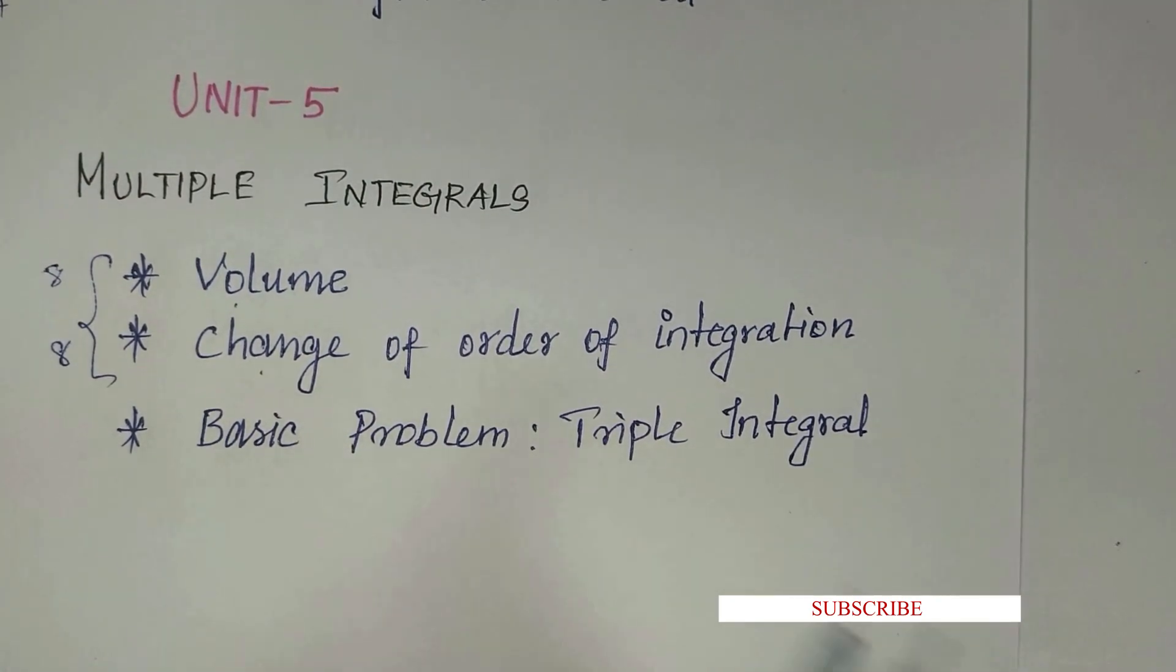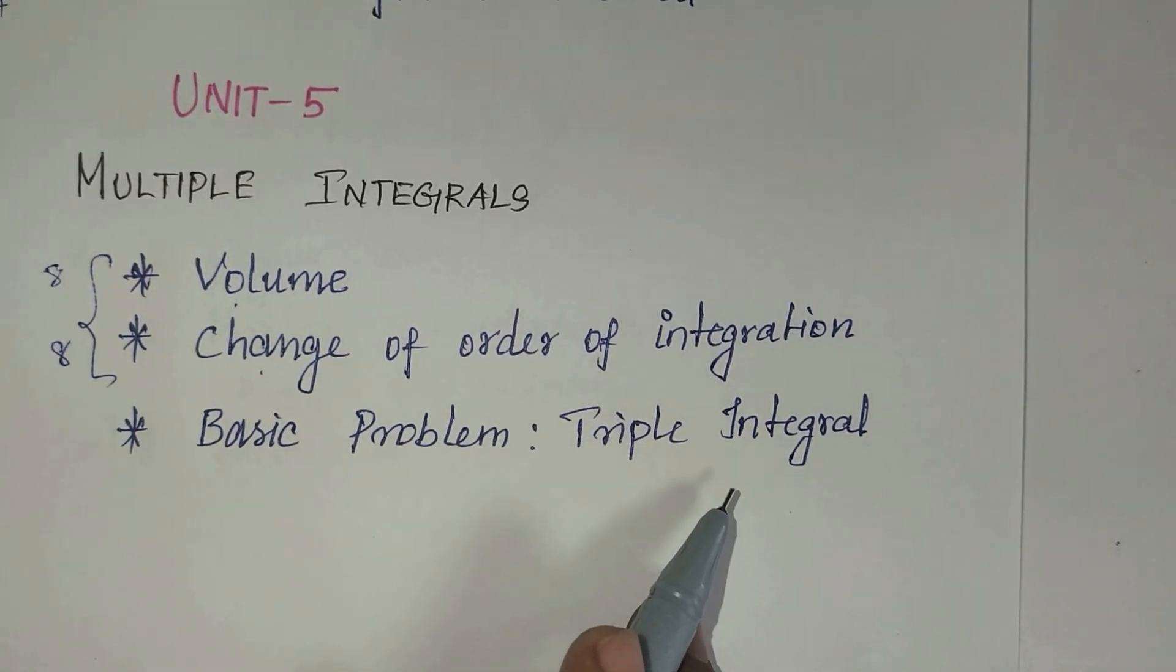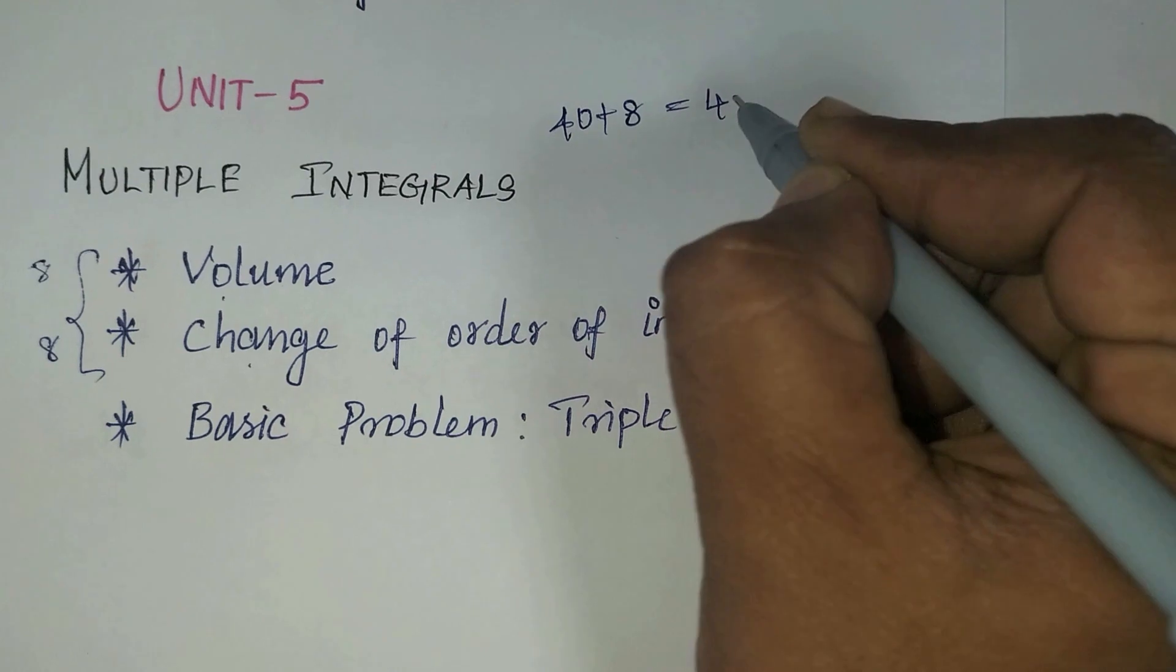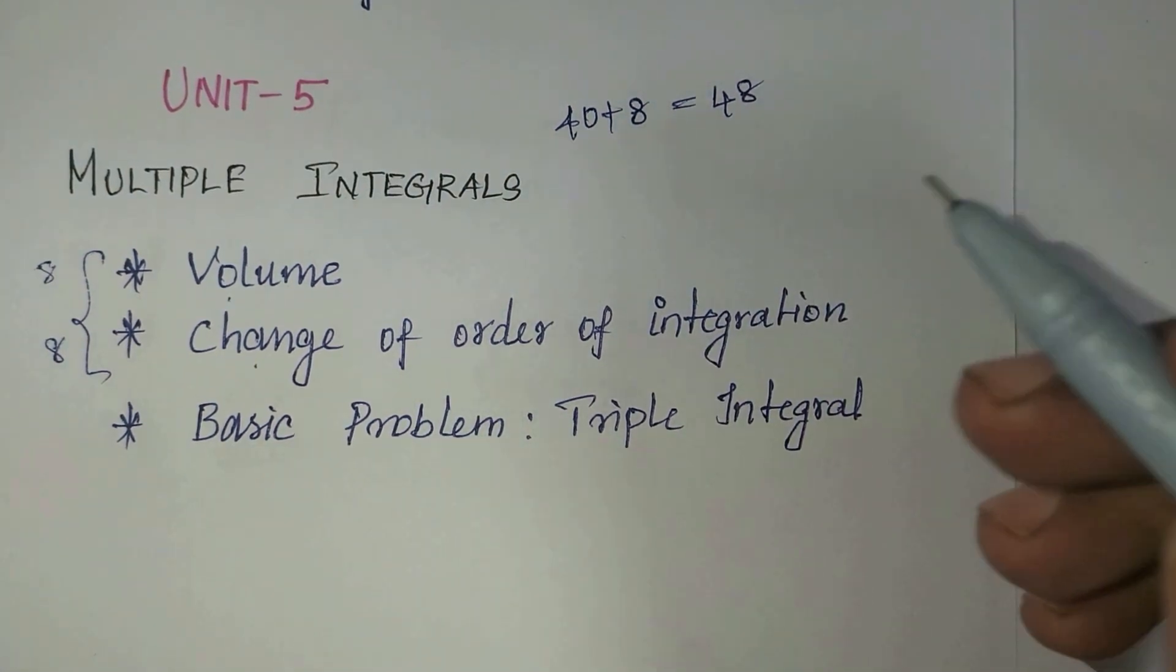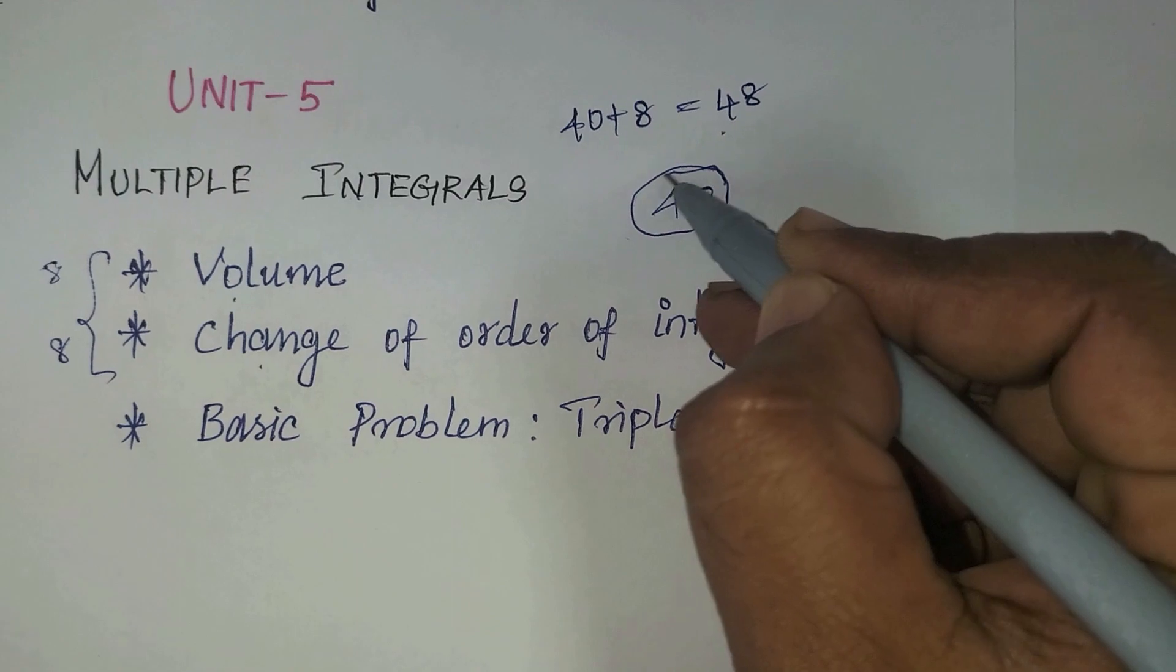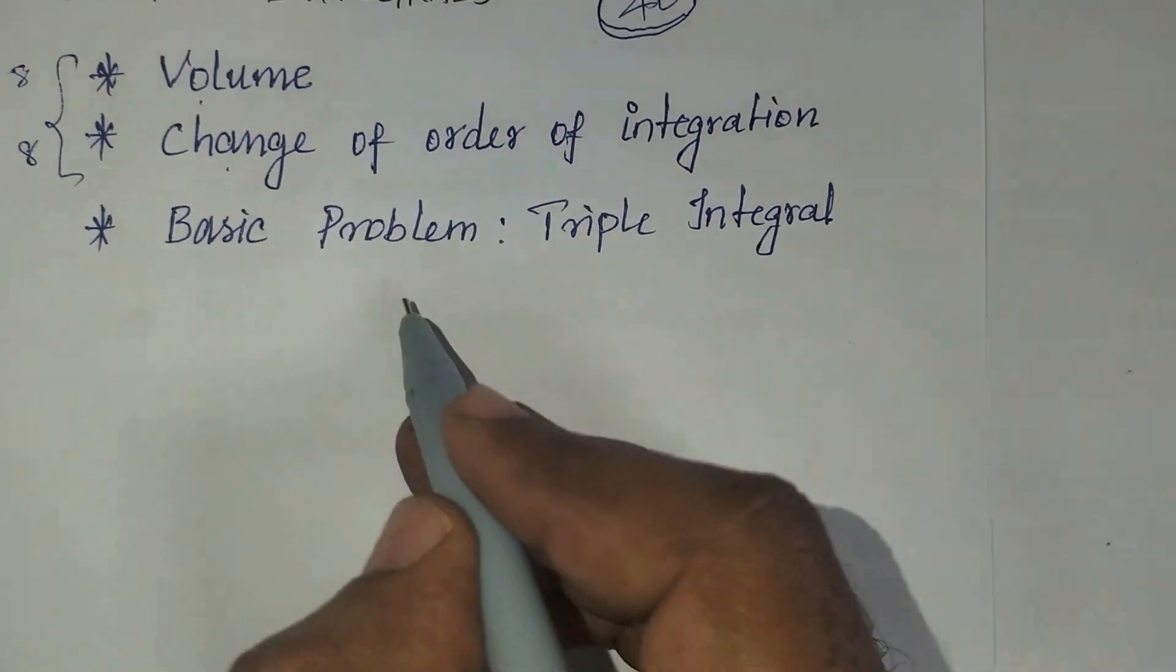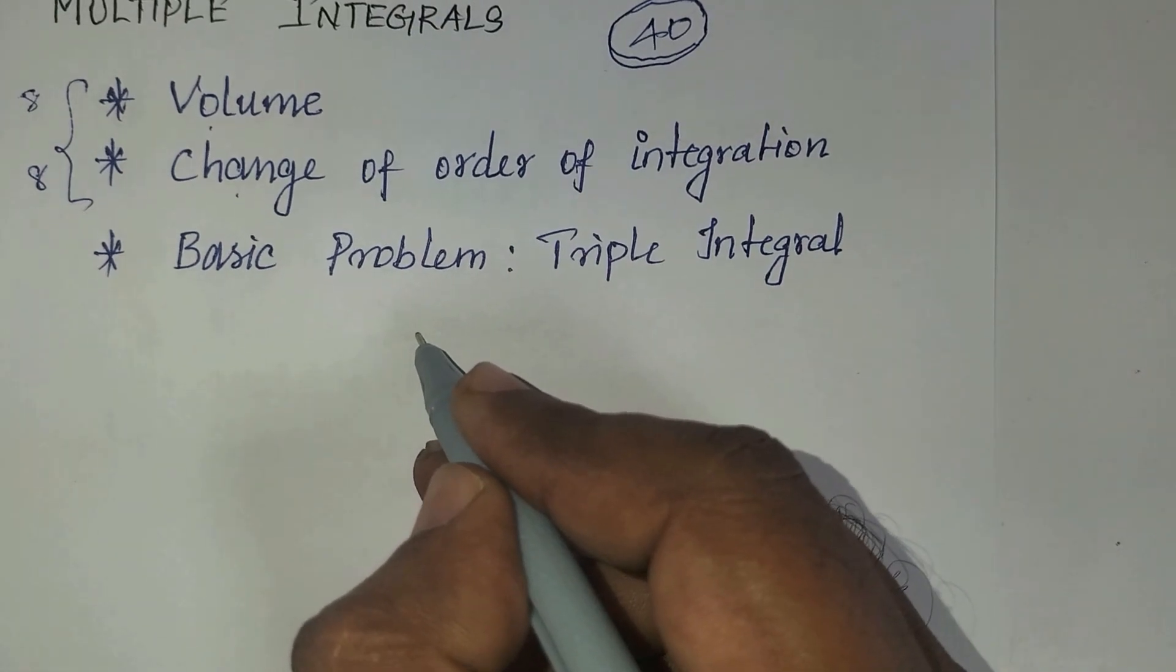Basic problems in triple integral, how to apply triple integral, all those things. So 40 plus 8, 48, right? Finally, suppose you are making some mistakes while doing the problem. Out of this 48, minimum you may get, definitely will get 40 marks. So you scored 40 now. Minimum you can attend at least three or four 2-mark questions also. From that you will get, for example, you can take 6 marks from 2-mark questions. Now 46. So around you will get 50.